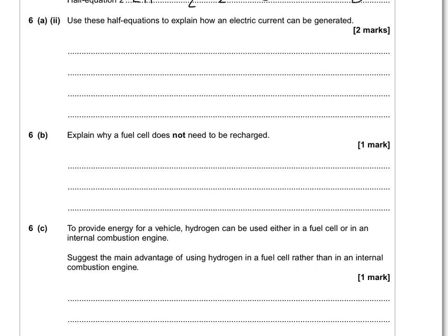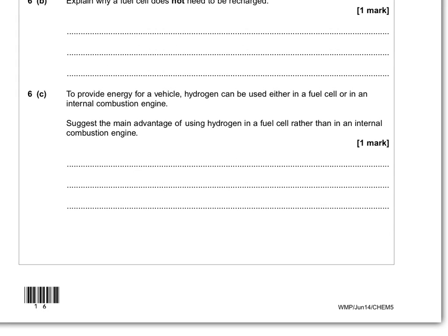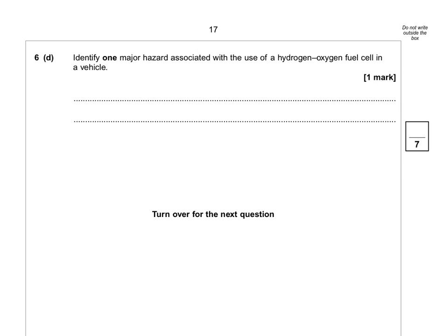Explain why a fuel cell does not need to be recharged: because the fuel is constantly fed in, or constantly supplied. The main advantage of using hydrogen in a fuel cell rather than an internal combustion engine is that it is more efficient — burning hydrogen in an internal combustion engine also wouldn't produce pollutants, so efficiency is the key distinction here. One major hazard associated with hydrogen–oxygen fuel cells in a vehicle: H₂ is flammable.